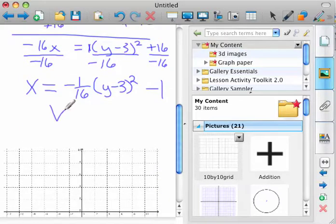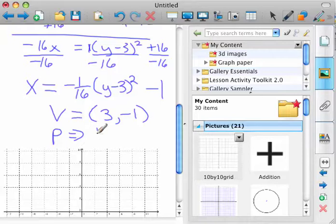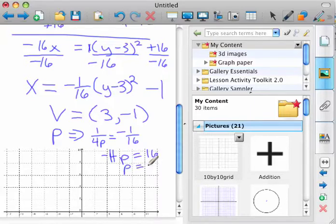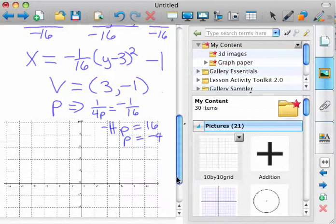And so your vertex is 3, negative 1. To find p, or your foci, to do that, you take 1 over 4p and set it equal to the quadratic term, which in this case is negative 1 sixteenth. And so p equals 16 as you cross-multiply. So p equals negative 4. So that'll help us find the foci.